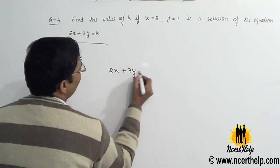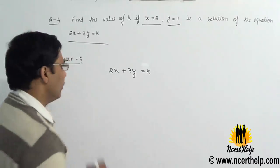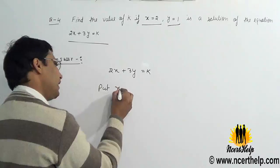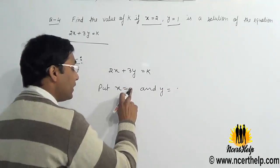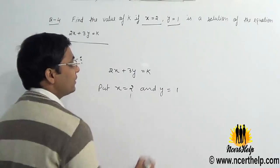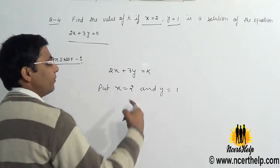Now it is given that x equals 2 and y equals 1. So we put x equals 2 and y equals 1 in the given equation.